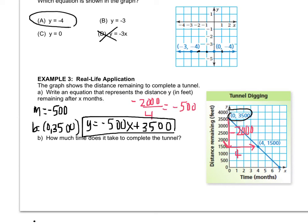Letter B. How much time does it take to complete the tunnel? Well, the tunnel is completed when there's no distance remaining. So when there's no distance remaining, I'm right here at the point 70, which means seven months will have passed when the tunnel is complete.